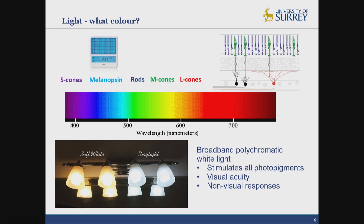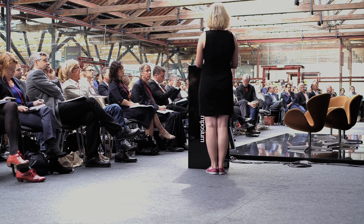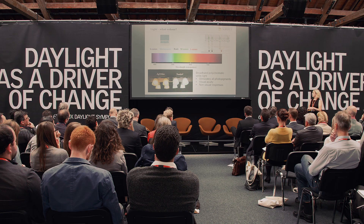When melanopsin was first discovered and found to be driving these non-visual effects, there was a flurry of development of blue light products on the market. But over the last few years, research has established that the visual photopigments can also contribute to these non-visual effects on physiology and behaviour. So there's been more of a move toward trying to optimise polychromatic white light — stimulating all the photopigments for both non-visual and visual effects — and what we're seeing now are blue-enhanced lights coming onto the market that mimic daylight.